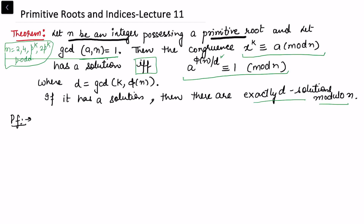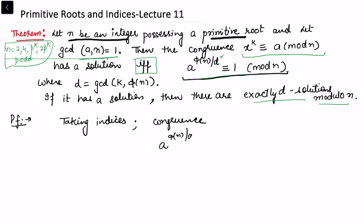Let's look at the proof. We want to solve x^k ≡ a (mod n), and we say this has a solution if and only if that congruence holds. Taking indices on both sides, we get a^(φ(n)/d) ≡ 1 (mod n). The exponent comes to the front, giving us the index of a, and we have seen in the previous example that it doesn't matter which primitive root we select.